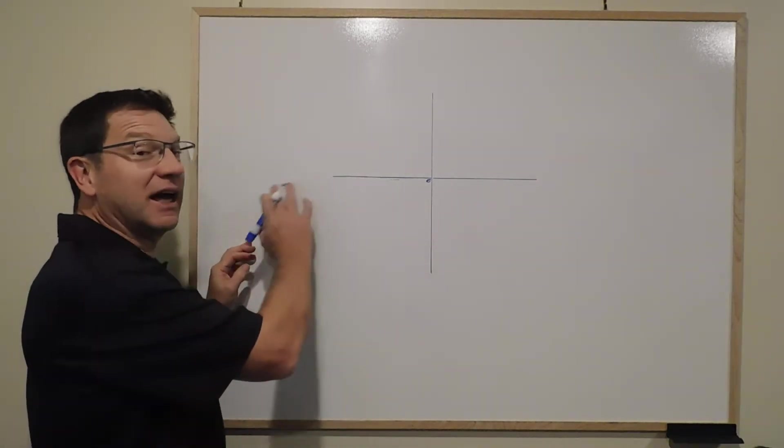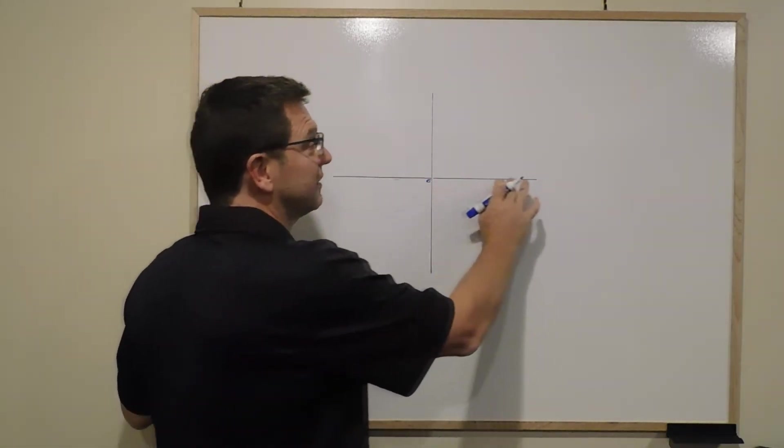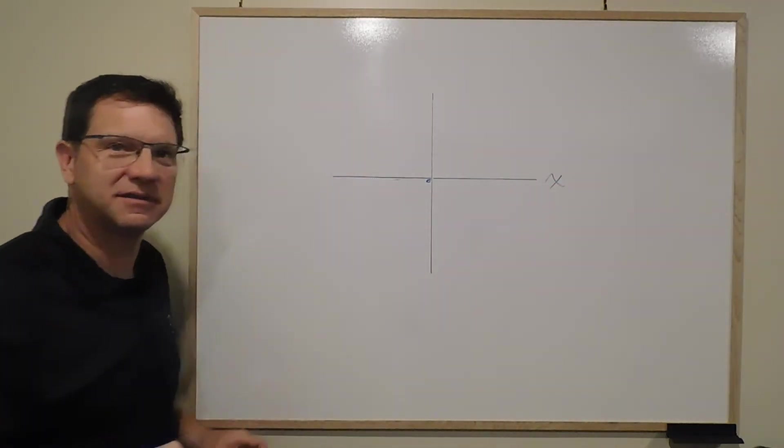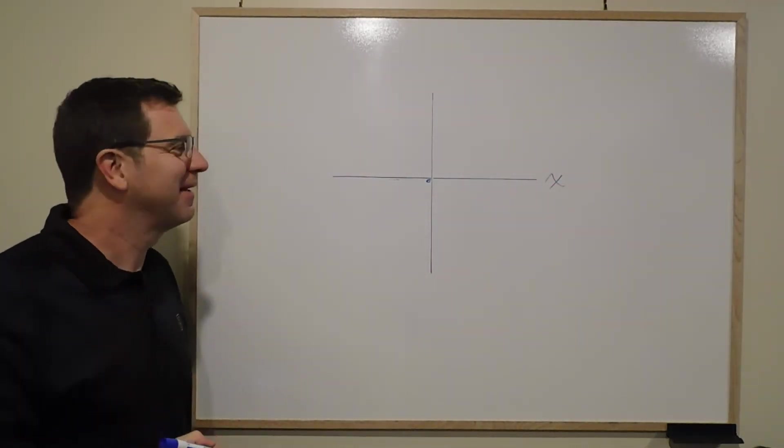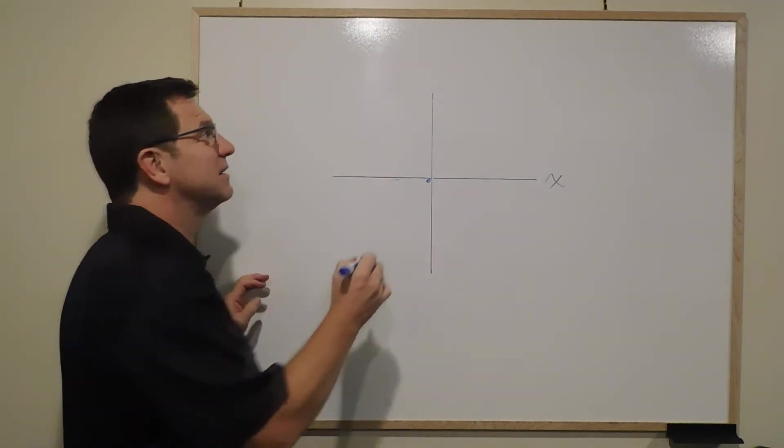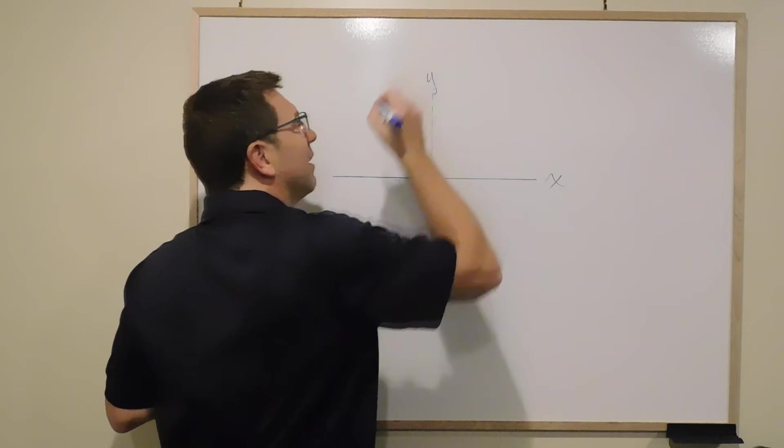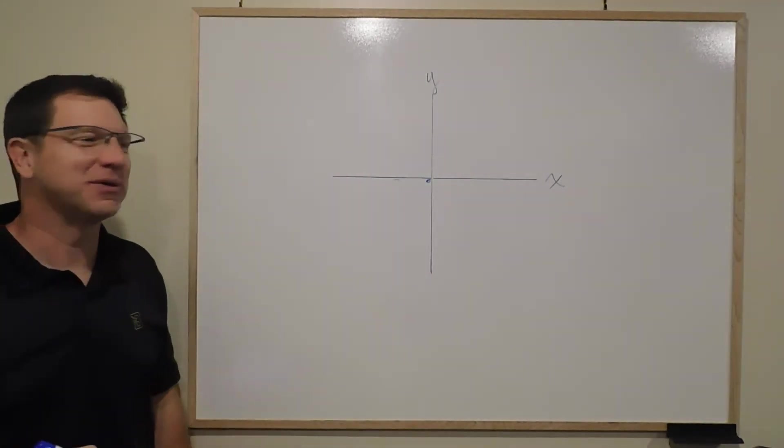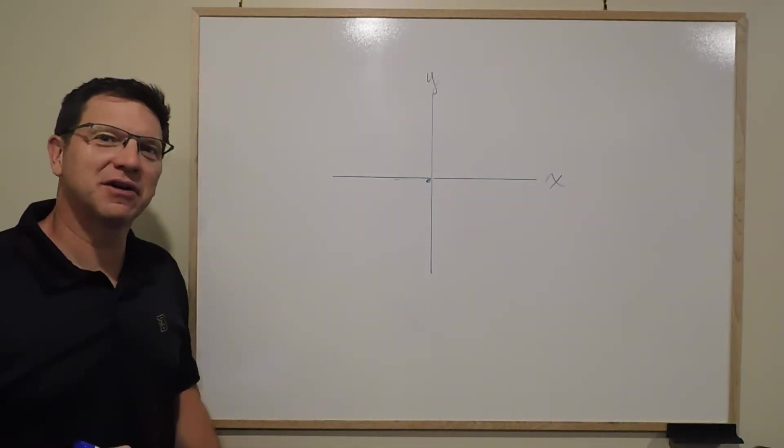The x-axis is the horizontal axis and we label it with an x. Very creative, us math people. The y-axis represents the vertical axis and we label it with a y. Super creative. Those are the important things.